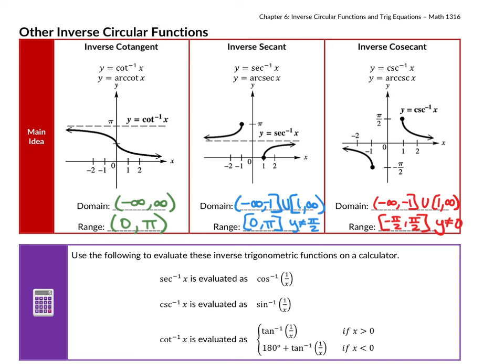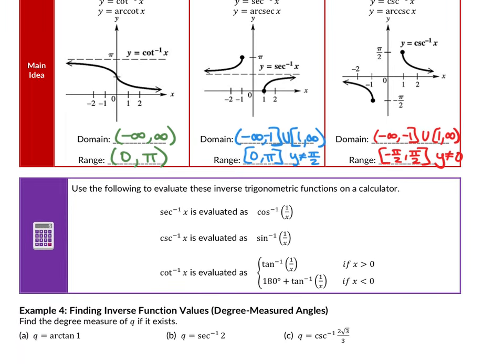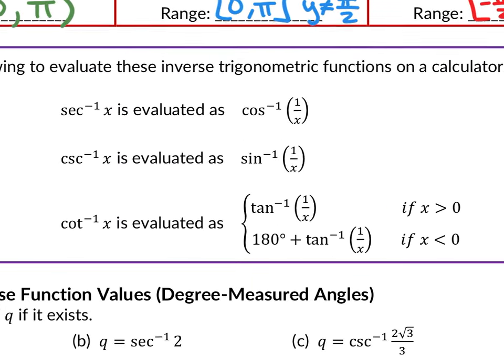What's more important is being able to evaluate these functions — using your calculator as well as by hand. On a calculator, since there are no secant, cosecant, or cotangent buttons, you use the reciprocal: inverse secant is typed as inverse cosine of the reciprocal of the input. Same for cosecant and cotangent. However, if the x-value for inverse cotangent is less than 0, you must add 180 to the answer.